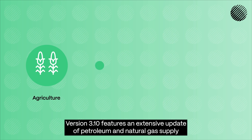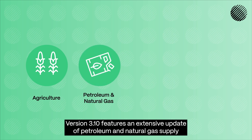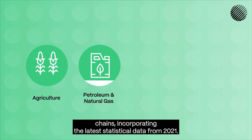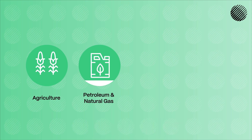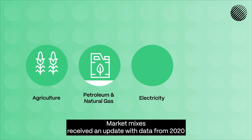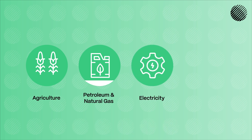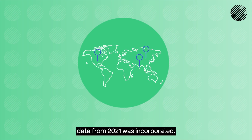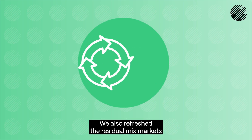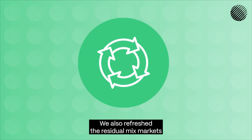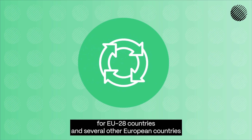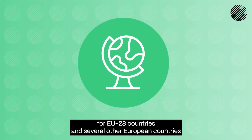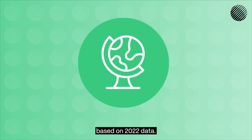Version 3.10 features an extensive update of petroleum and natural gas supply chains, incorporating the latest statistical data from 2021. Market mixes received an update with data from 2020, and for select countries including China, India, and the United States, data from 2021 was incorporated. We also refreshed the residual mix markets for EU-28 countries and several other European countries based on 2022 data.